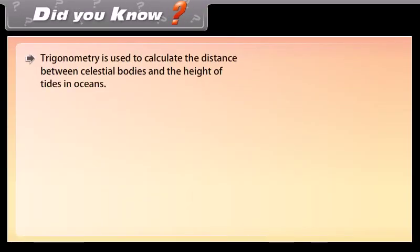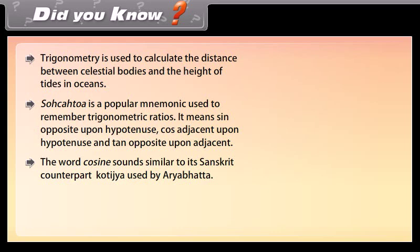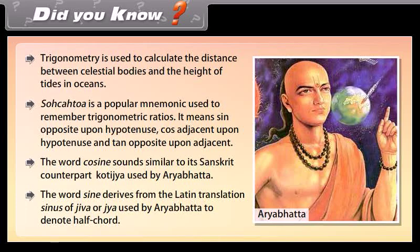Did you know? Trigonometry is used to calculate the distance between celestial bodies and the height of tides in oceans. SOH-CAH-TOA is a popular mnemonic used to remember trigonometric ratios: Sin = Opposite/Hypotenuse, Cos = Adjacent/Hypotenuse, Tan = Opposite/Adjacent. The word cosine is similar to its Sanskrit counterpart Kotijya used by Aryabhata. The word sine derives from the Latin translation Sinus of Jeeva or Jya, used by Aryabhata to denote half-chord.